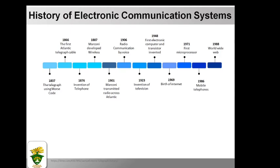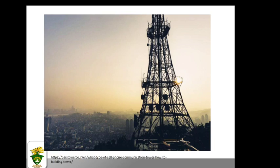In 1971, the first microprocessor was developed. In 1986, we have the mobile telephone, and in 1988, the World Wide Web. As some sort of history, we have been utilizing the benefits of technology developed in recent years. In these trying times of pandemic, there is a tower representing the communication system — communication systems play a vital role.